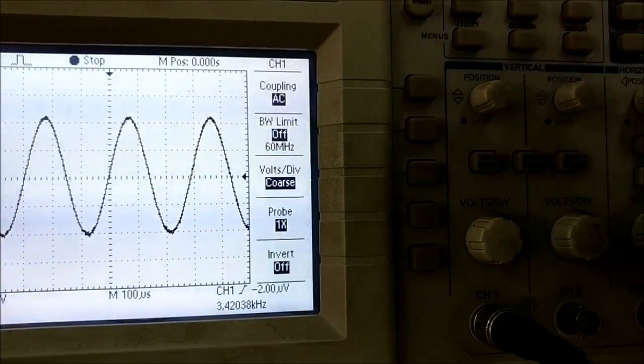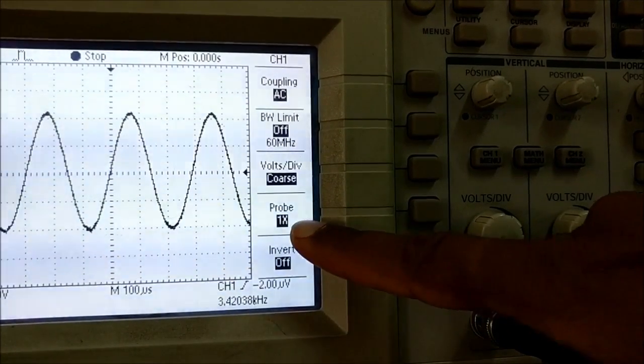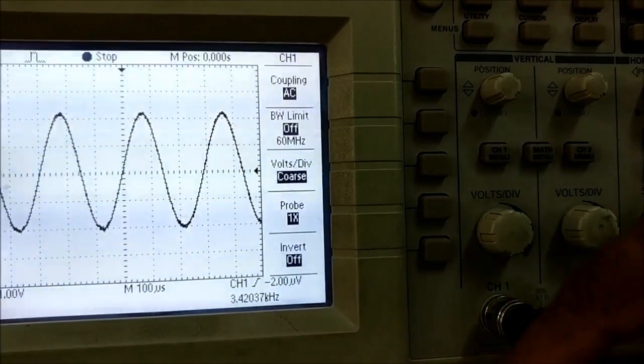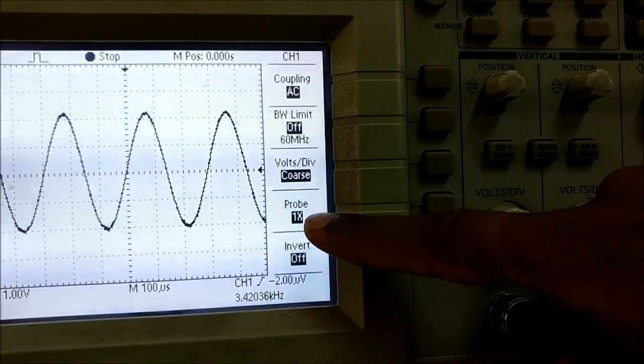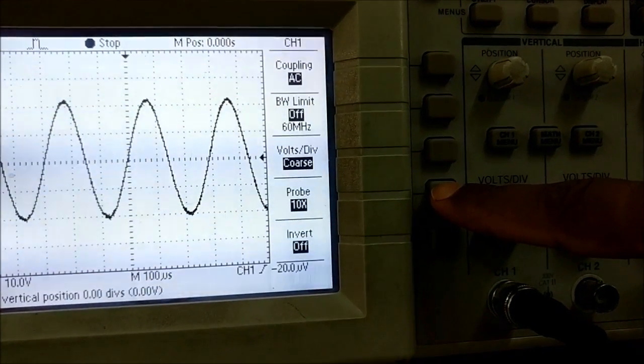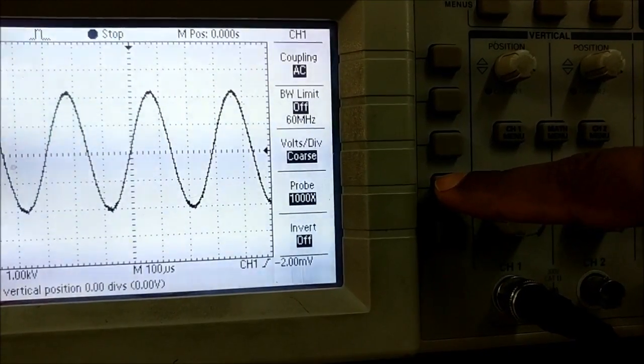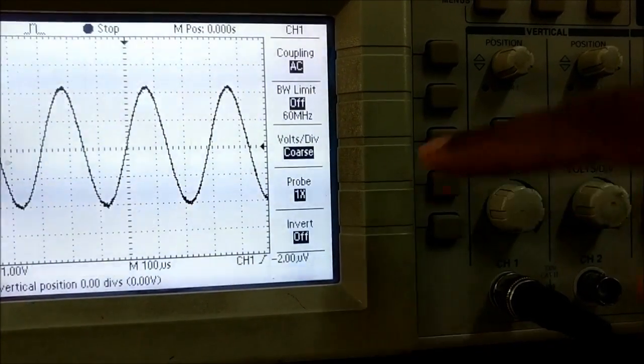On channel 1, we can see the probe setting is 1x. 1x means whatever signal is coming is not amplified, it's of the same magnitude. We can increase it to 10x, 100x, or 1000x. Let's keep it to 1x only.